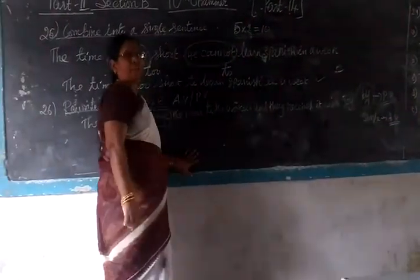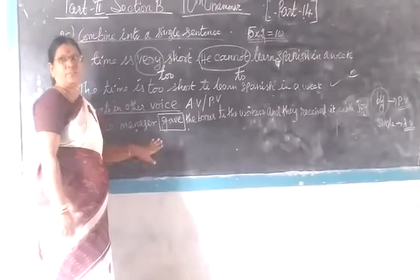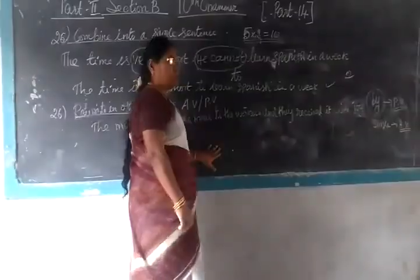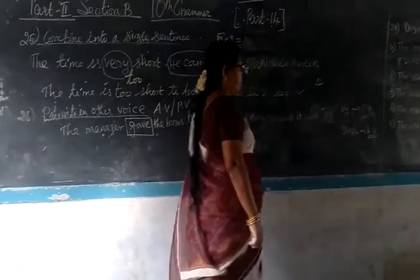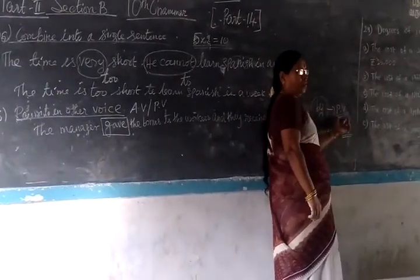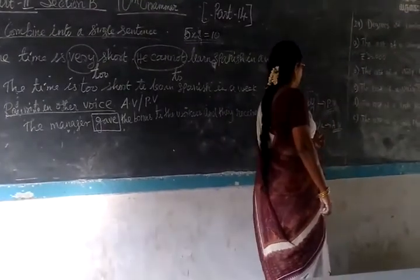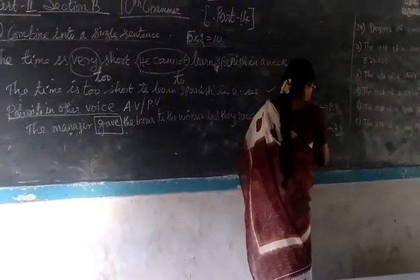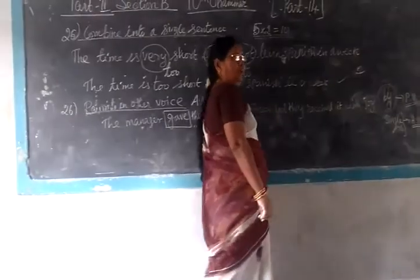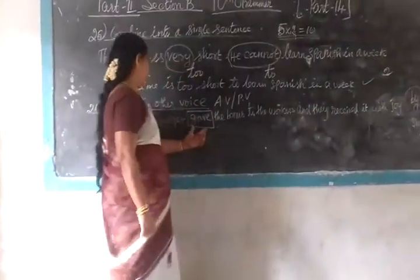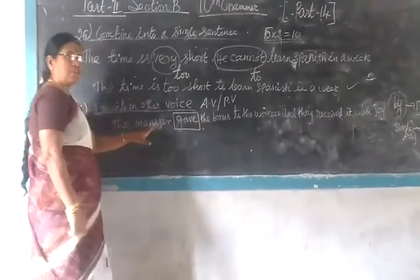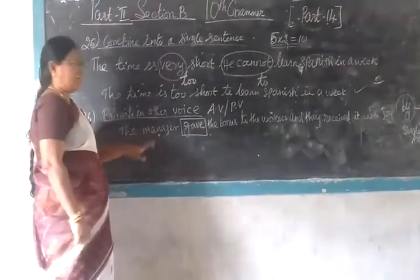So, definitely the given sentence is in active voice. This is a simple method to know whether it is active voice or passive voice. If you find 'by', the given one is passive voice. If you find only a single verb, the given one is active voice. Here it is given 'gave', so definitely the given sentence is active voice.